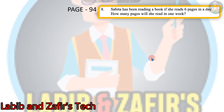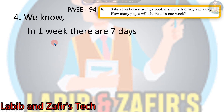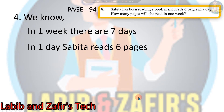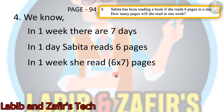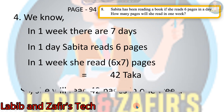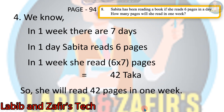Now let's go to the next one. Our fourth question: Savita has been reading a book. If she reads 6 pages in a day, how many pages will she read in one week? We know in one week there are 7 days, so in one day Savita reads 6 pages. In one week she reads 6 multiplied by 7 pages, and here it is a mistake — it will be 42 pages. So she will read 42 pages in one week.